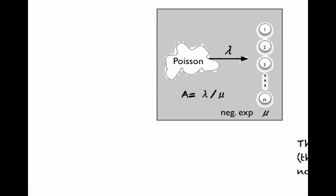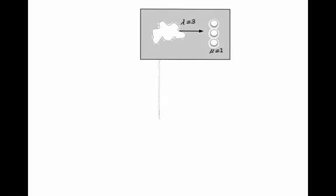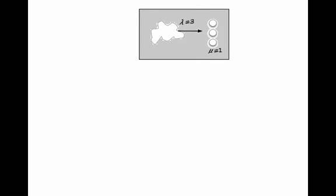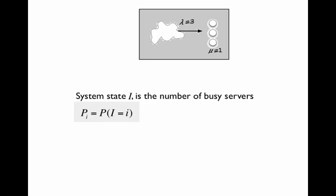To see what Erlang did, consider this scenario with only three lines, or servers. If all three lines are busy, an arrival call is lost and leaves the system. Let the system state i denote the number of busy lines or servers. We will now derive the state probabilities.